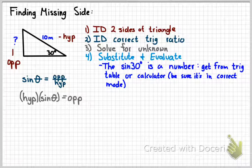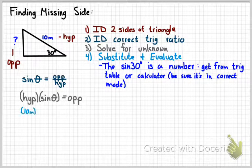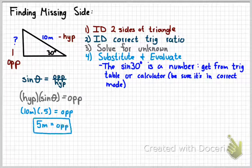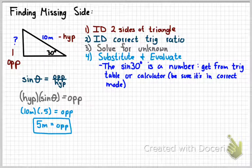So the sine of 30 degrees is a number. As it turns out, it's a half, 0.5. And so plugging in, 10 meters times 0.5 gives me 5 meters. Since the sine, cosine, and tangent are ratios, they don't have any units. So my answer is going to have the same unit as my givens.